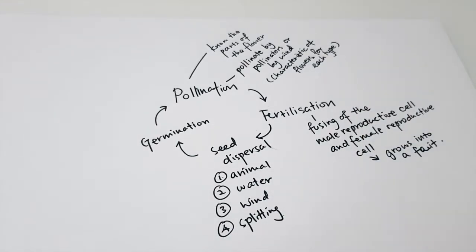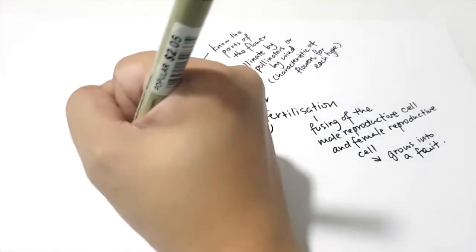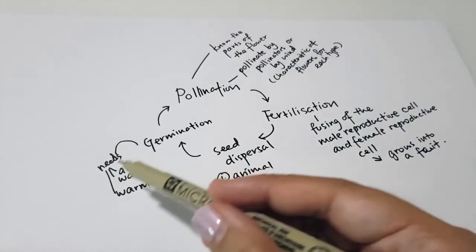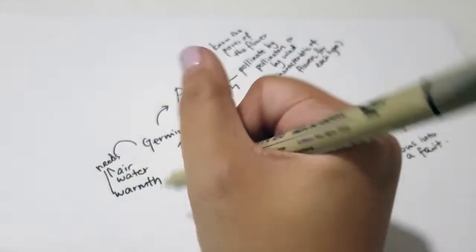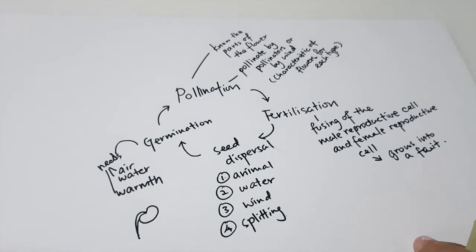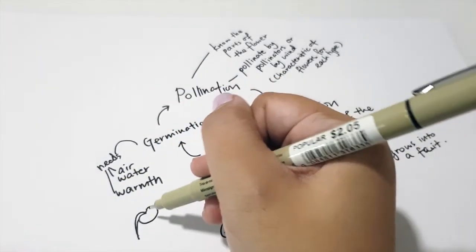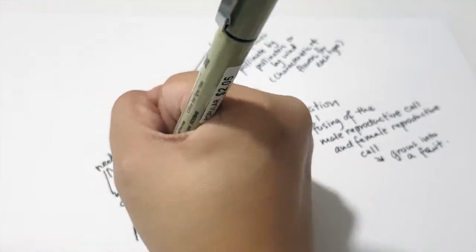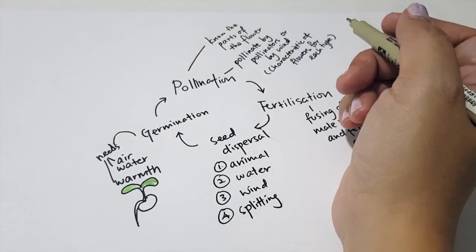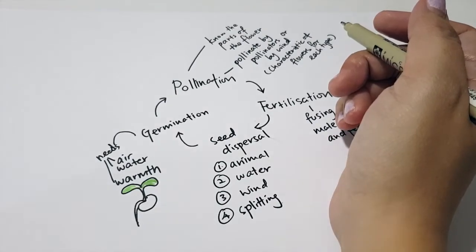For germination, the conditions a seed needs are air, water, and warmth — but not sunlight at this stage. The roots come out of the seed first, and then the shoots come out. Only after the first leaves grow do they need sunlight to make food and grow.